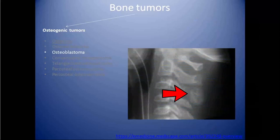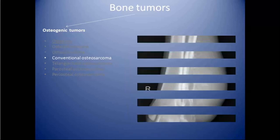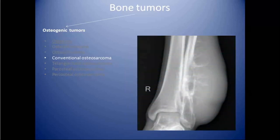Next is osteoblastoma, which is a rare tumor with the most common location in the posterior elements of the spine, characterized by a lytic focus with extensive ossification. Next is conventional osteosarcoma, which is the most common primary malignant bone tumor in children. It is predominantly metaphyseal in location in long bones, most commonly seen around the knee joint, in patients aged 10 to 25 years. There can be a second peak in patients over 60 years of age.